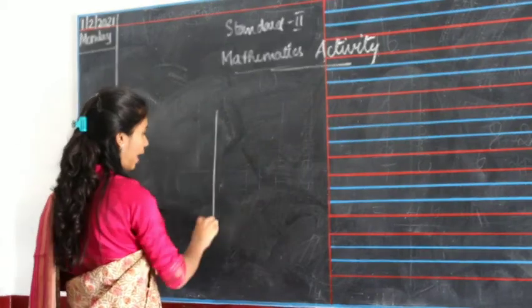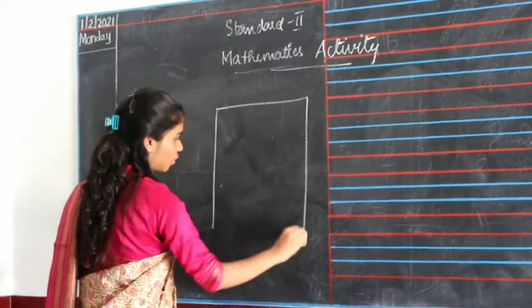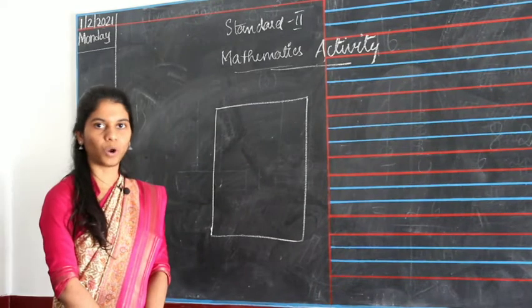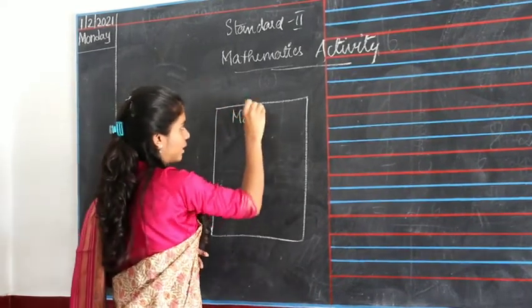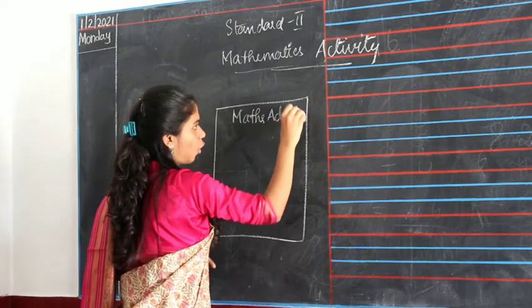You have to take an A4 sheet. For example, this is your A4 sheet. And what you have to do is write 'Mathematics Activity' on the top.